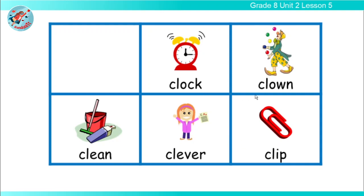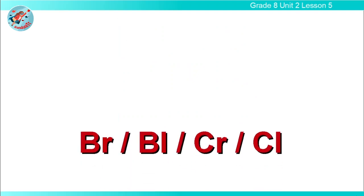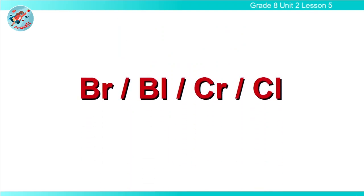Clock, clown, clean, clever, clip. What's the significant sound? The 'cl' sound. So in the last two sets of words, you found the 'cr' sound and the 'cl' sound. Today in this lesson, we are going to pay special attention to four sounds: 'br,' 'bl,' 'cr,' and 'cl.'